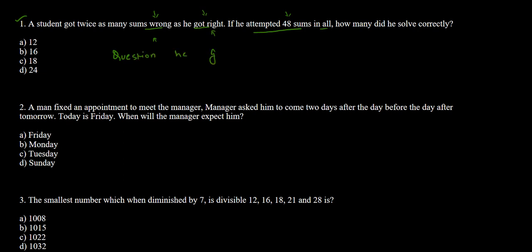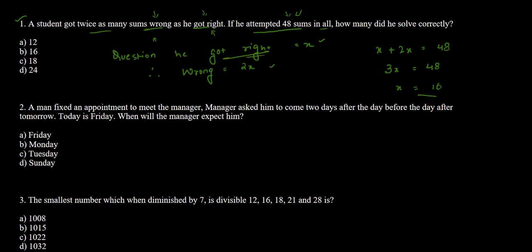Let us assume the questions he got right to be x. Therefore wrong will be 2x, because he got twice as many sums wrong as right. Total is x + 2x = 48, so 3x = 48, therefore x = 16. He solved 16 questions correctly, which is option B — hence option B is the correct answer.